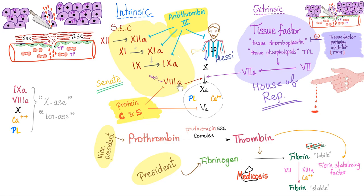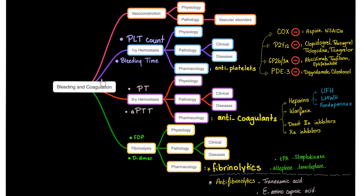Liver disease: most of the coagulation factors will suffer because they come from the liver. This mind map will help you tremendously navigate through the coagulation or bleeding defects.